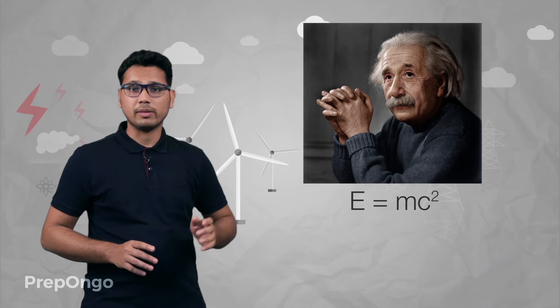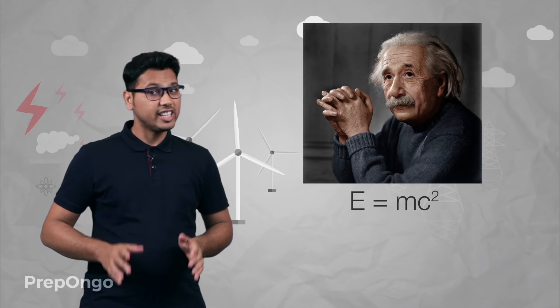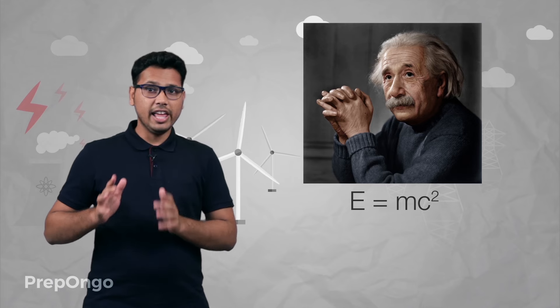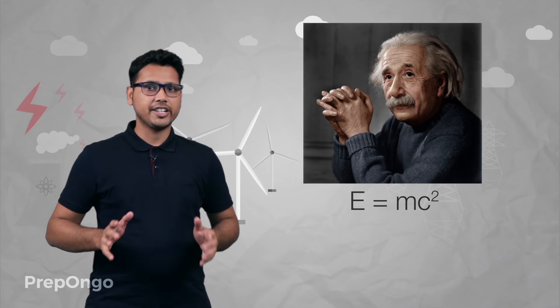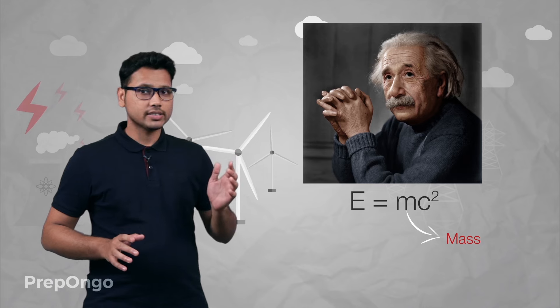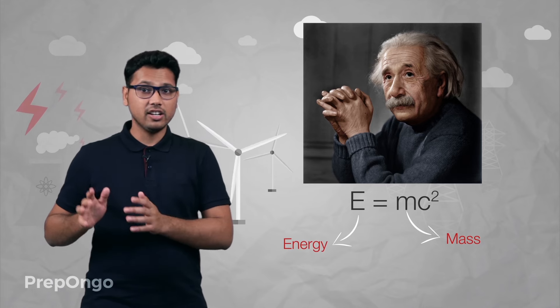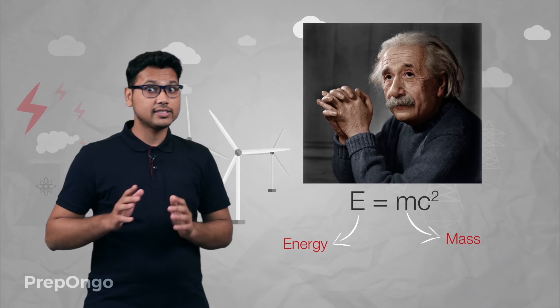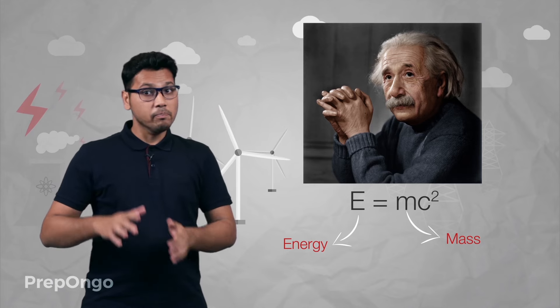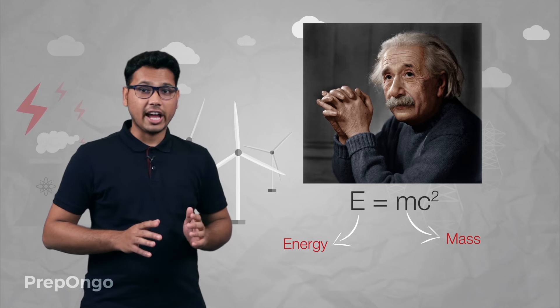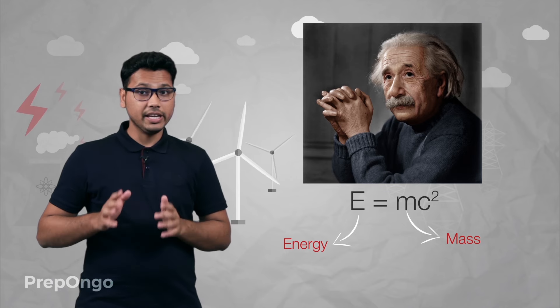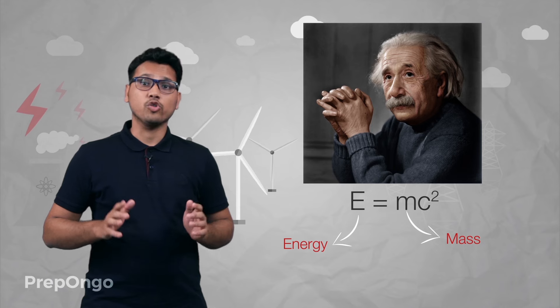Now we started to learn about this energy after Albert Einstein gave his famous equation E equals mc squared. This equation linked the totally unrelated quantities mass and energy. So this established a vital link between mass and energy and it said that mass can be converted into energy and vice versa. That means even energy can be converted into mass.